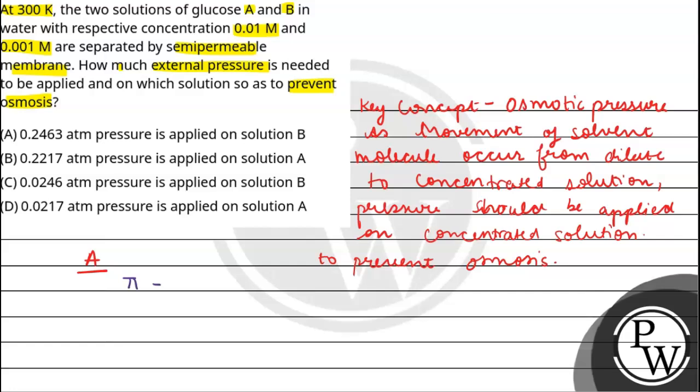Osmotic pressure π is given by CRT formula. We have π is osmotic pressure, C is concentration, R is the gas constant, T is temperature. For 0.01 molar solution, π1 will be 0.01 multiplied by R value 0.821, temperature is 300 Kelvin. This gives 0.2463 atmosphere.